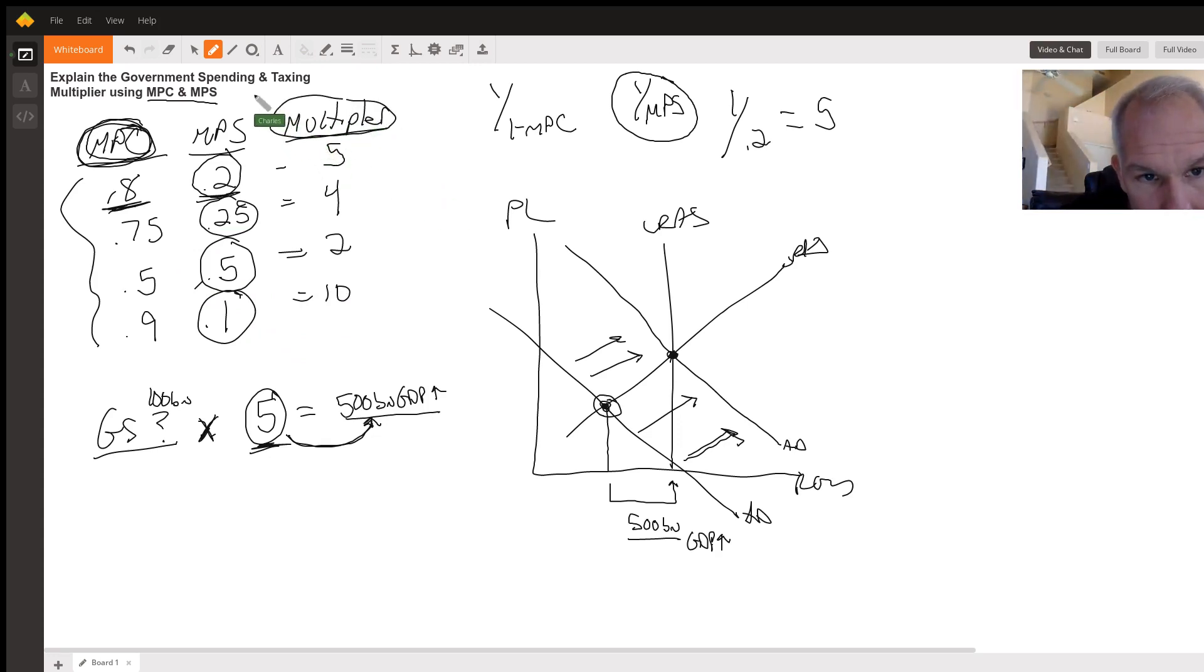Obviously, the easiest thing about the taxing multiplier, which is different than the spending multiplier. A quick sort of understanding is that the taxing multiplier is always one less than the spending multiplier. So my taxing multiplier is going to be four. I still need to get 500. If instead of government spending, I had decreased taxes, I would need to decrease taxes by 125 times the four to get a 500 billion increase in GDP. So we could see that taxing multiplier. I would have had to lower taxes by 1.25 billion, multiply that by the four to get the 500 billion GDP.